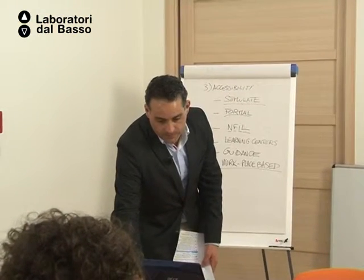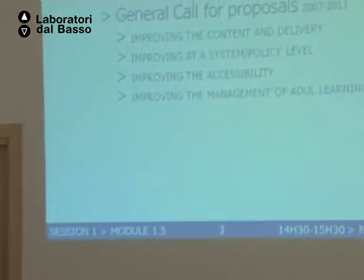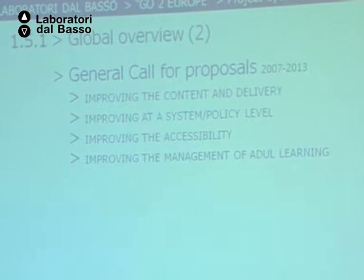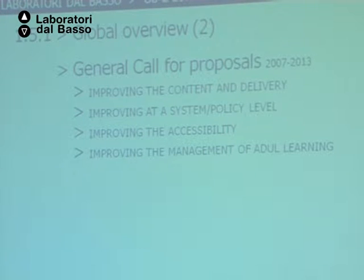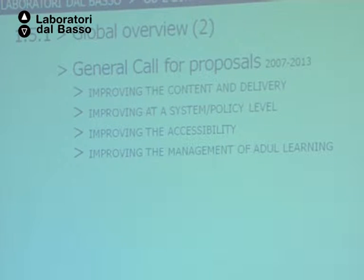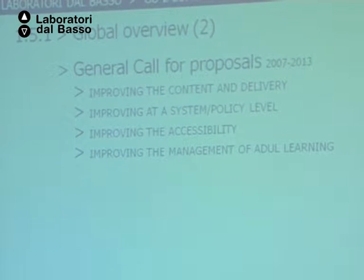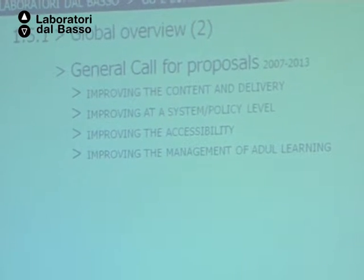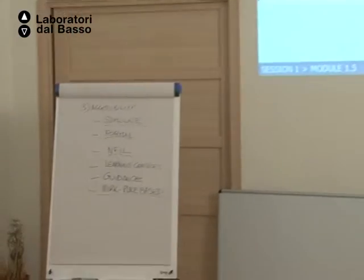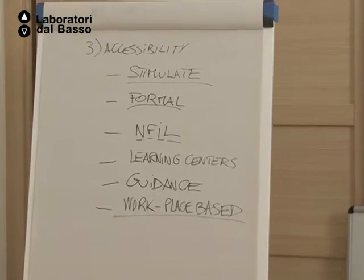The last package is the management of adult learning. So you have four mainstream packages in the overall program's strategic priorities, and within each of these four packages there are sub-strategic orientations. Everything is in the guide. What I'm trying to do right now is give you the definition and connect it with concrete examples so you have a clear idea of what they mean.